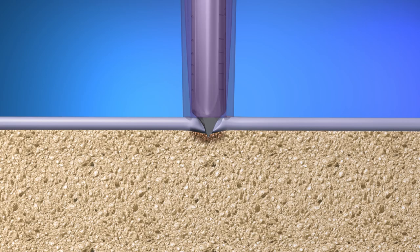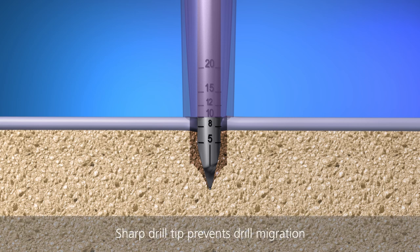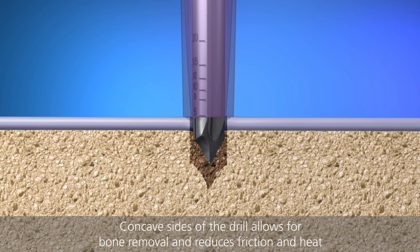Drill under direct visualization with drill guide perpendicular to the adjacent articular surface. Drill site to desired depth using depth markings. The sharp tip of the drill creates a starter hole and prevents the drill from migrating off the intended site. The concave sides of the fluted drill remove bone during drilling to reduce friction and heat.